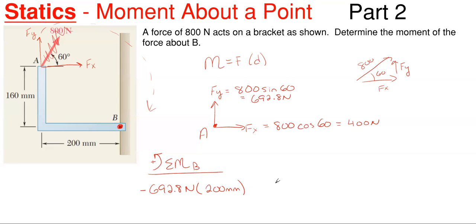And then our FX, which is 400 newtons times its perpendicular distance, which would be the 160 millimeters because it is a horizontal force, needs a vertical distance. It also would be swinging clockwise about point B as if it were tethered to point B and swinging around. So that would also be negative. Maybe I should have made clockwise my positive rotation. And that's all we have here. So let's just tally this up real quick.